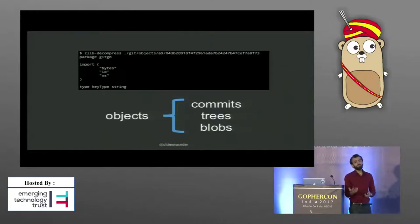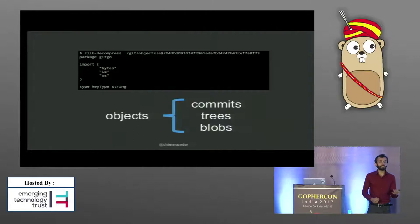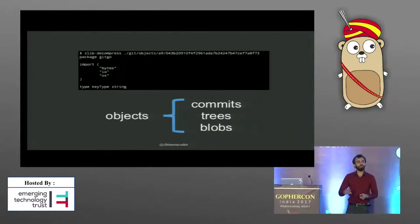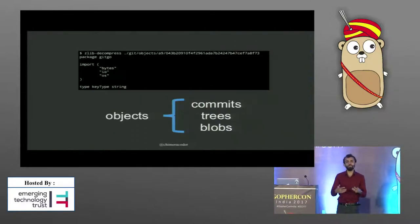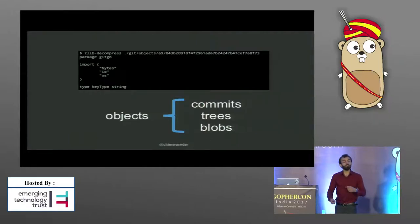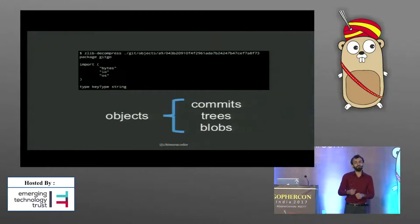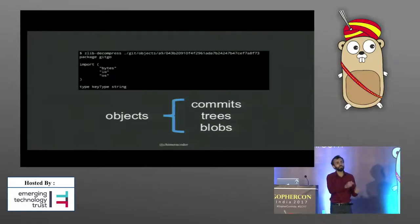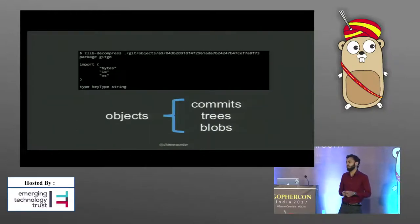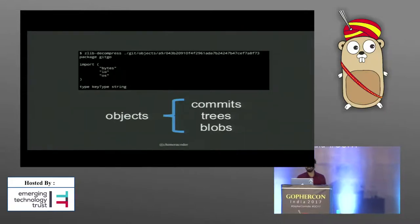A lot of people think that Git stores diffs, and that's actually not true. Git doesn't store anything that remotely resembles the diffs that you interact with. When you do 'git diff' or 'git log -p', those are all generated on the fly. That's why checking out a branch in Git is so fast — Git just needs to see which blob objects are referenced by a given commit, and then copy those back into your directory.